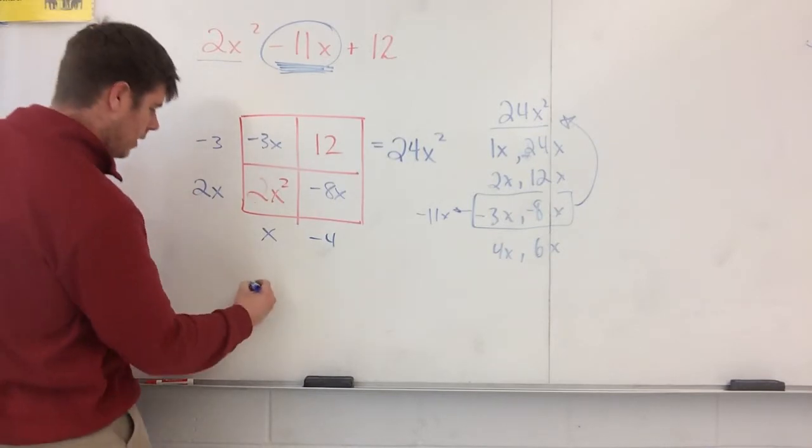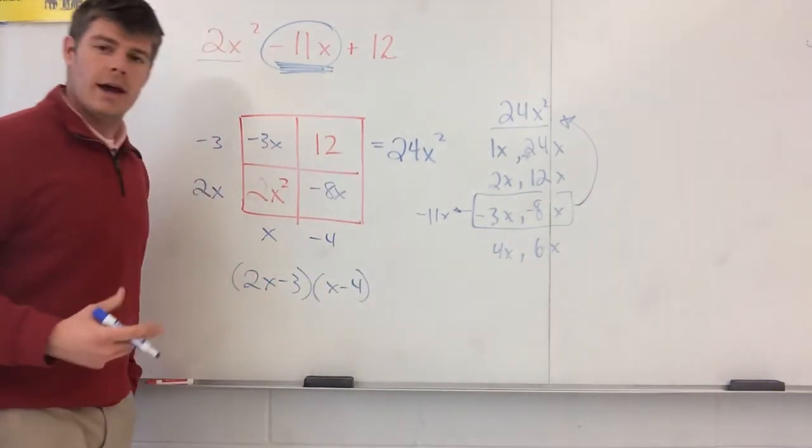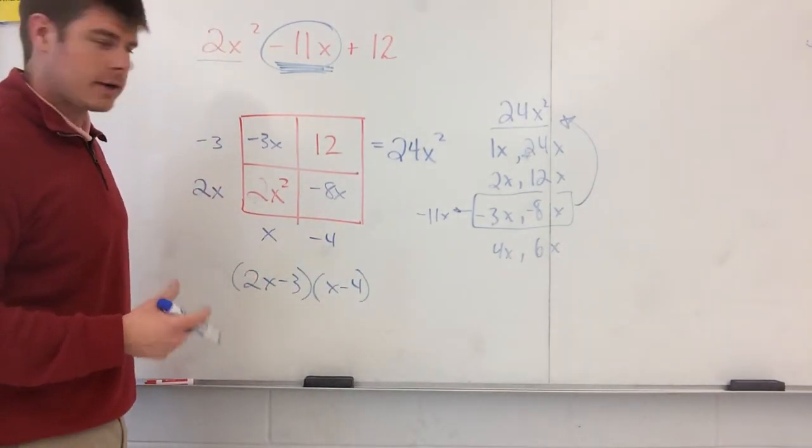You've got your answer. And the answer is 2x minus 3 times the quantity of x minus 4, and you've essentially just factored a quadratic. So I hope that helps.